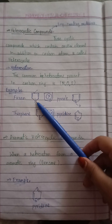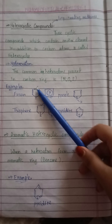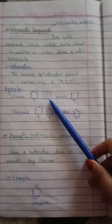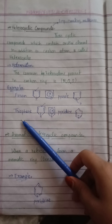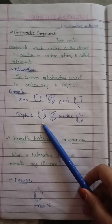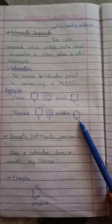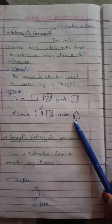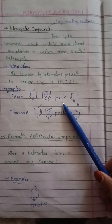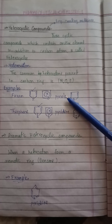For example, in furan, oxygen is present as the heteroatom, while the other four atoms are carbon. In thiophene, sulfur is the heteroatom along with four carbon atoms. In pyridine, nitrogen is the heteroatom with five carbon atoms. In pyrrole, nitrogen is the heteroatom while the other four atoms are carbon.